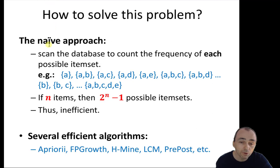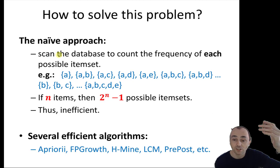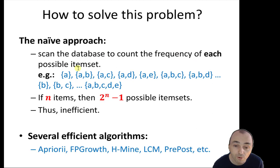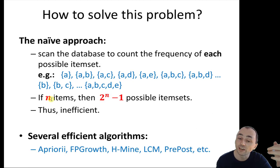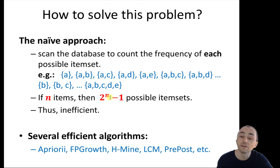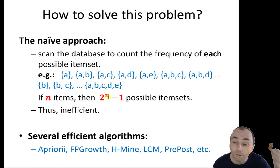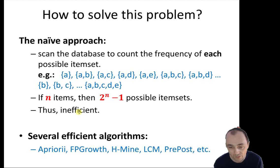How do we solve this problem? A naive approach is to scan the database with an algorithm to count the frequency of each possible itemset: A, A-B, A-C, A-D, A-E, A-B-C, A-B-D, B-C, and so on. But this is not a good approach because if you have n items, there will be 2^n minus one possibilities. With five items that's 31 possibilities, but with one million items it's 2 to the power of one million — so it's not a good approach.